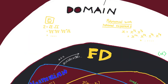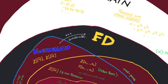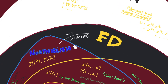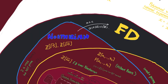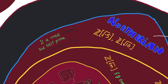We call a domain a factorization domain if every element has a factorization into irreducibles. An Artinian ring is going to be a factorization domain. In an Artinian ring, this kind of infinite divisibility cannot happen, because it would always create an infinite ascending chain, and every ascending chain in an Artinian ring must terminate. So in Artinian rings we do have factorization into irreducibles. However, the factorization will not necessarily be unique.